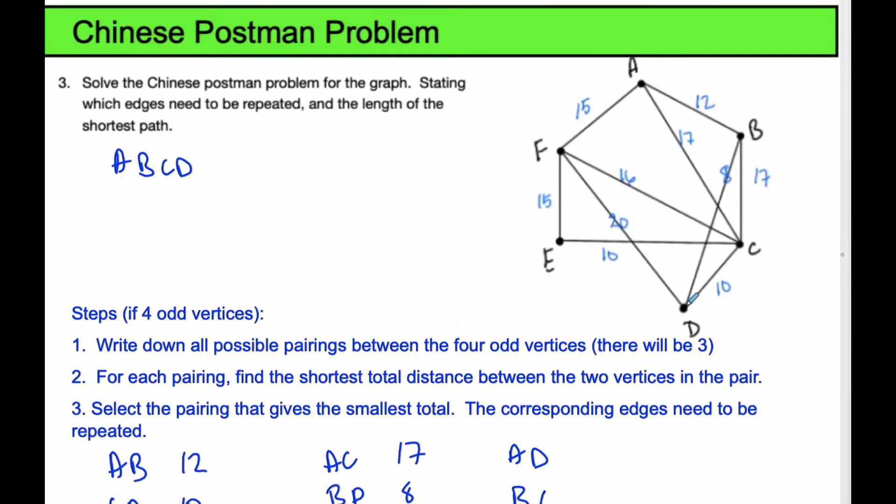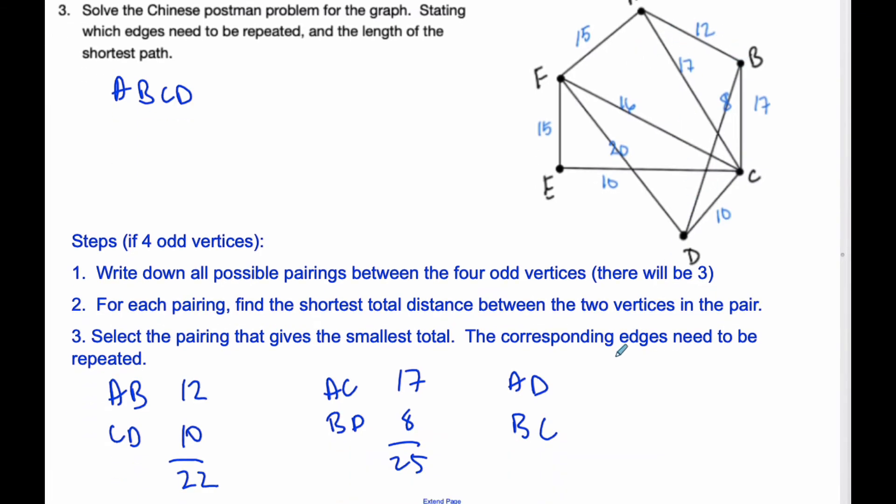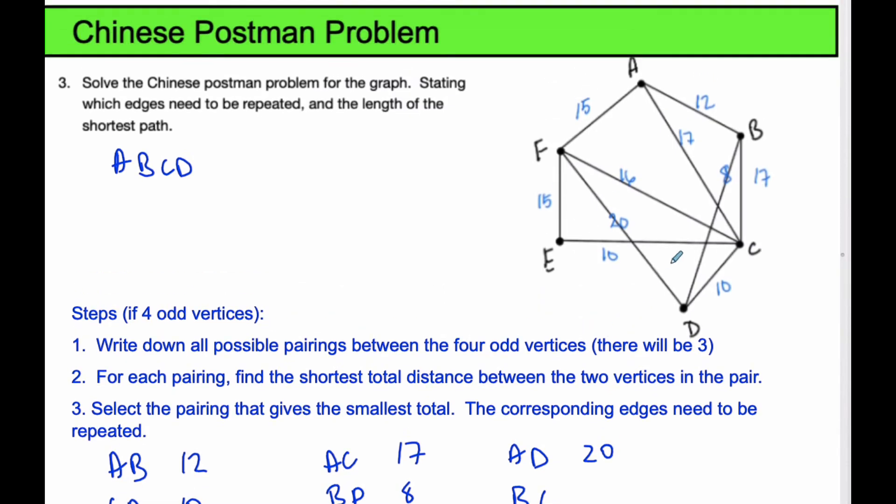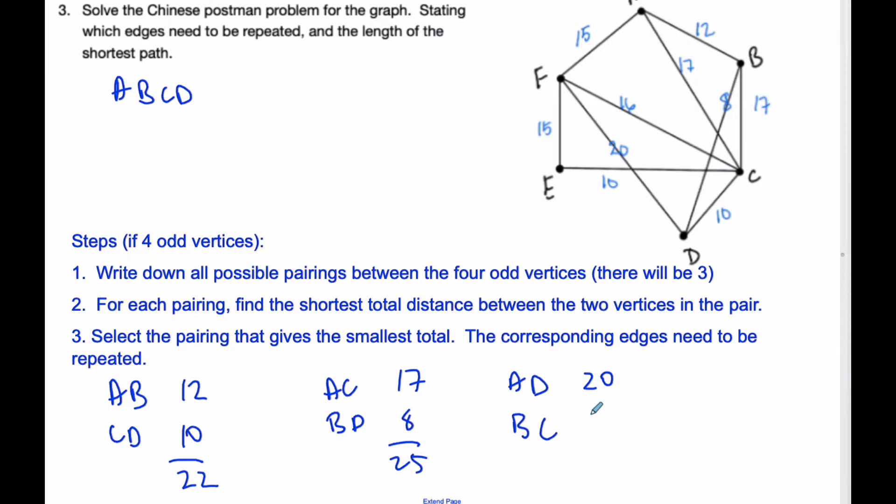And finally, AD, getting from A to D. Well, by inspection here, I can go 12, 17, and 10, or I can go 12 plus 8, 17, and 10. So by looking at it, it looks like the 12 and 8 is the shortest. That's 20. And then, BC, the shortest one here is going to be 8 and 10, that's 18, but the shortest is going to be 17. So 17 is the shortest, and that gives me a total of 37.